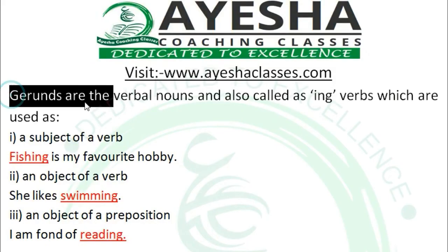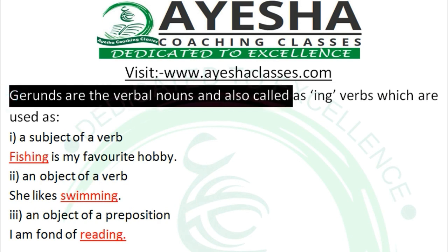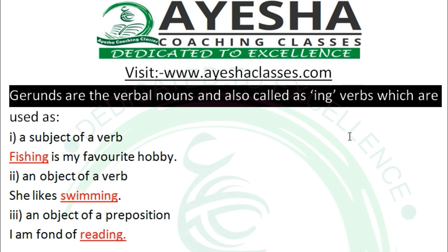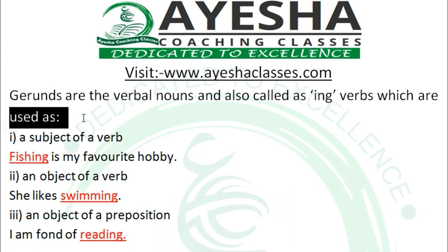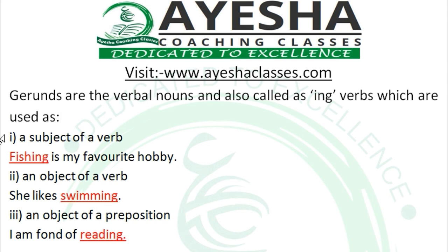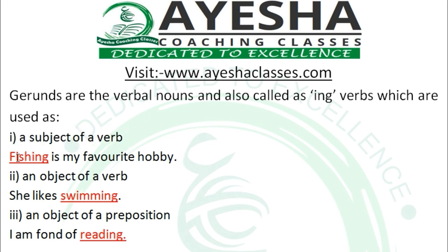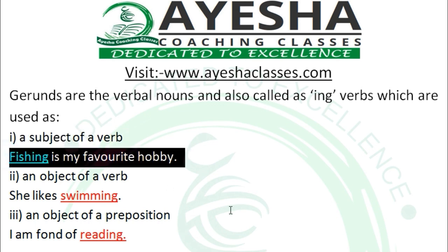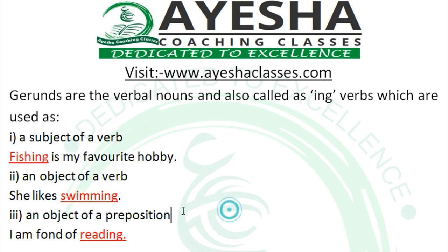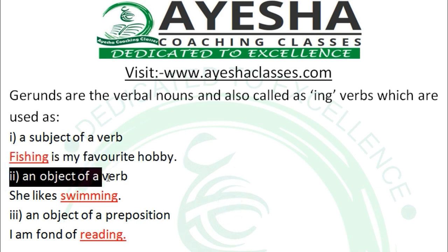So, gerunds are verbal nouns, also called '-ing' verbs used as nouns. The first use is as the subject of a sentence. For example: 'Fishing is my favorite hobby.' Here, 'fishing' is the gerund used as the subject.